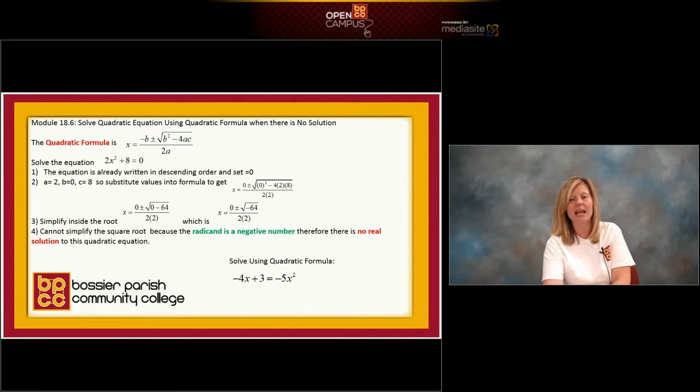So let's look at the PowerPoint. Here is my quadratic equation: 2x squared plus 8 equals zero. I want to solve that using the formula. So it's already set equal to zero, and it's already in the correct descending order. So now I need my values of a, b, and c. a is always the coefficient in front of x squared. That's two.